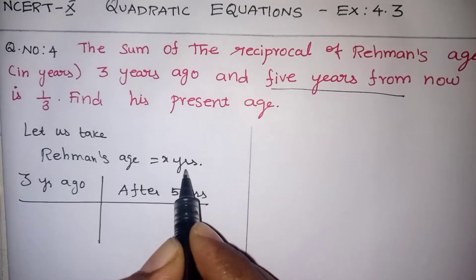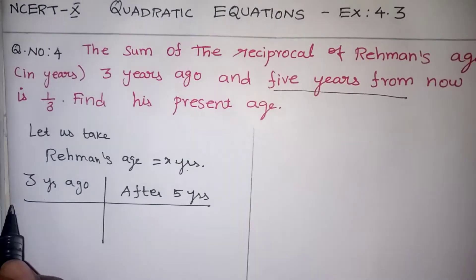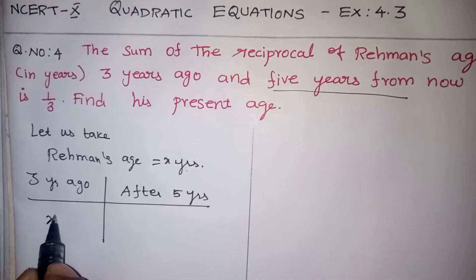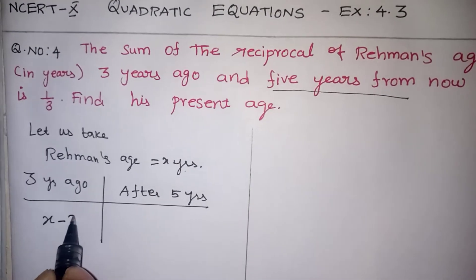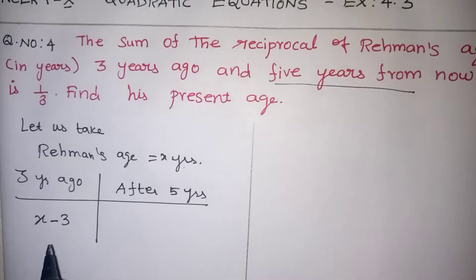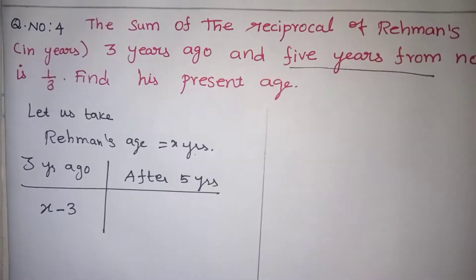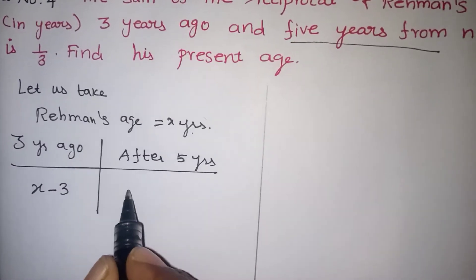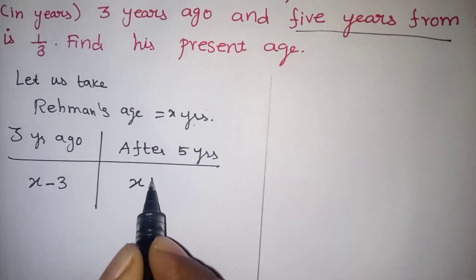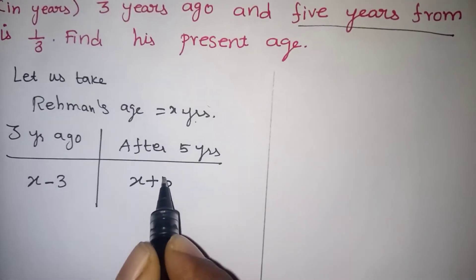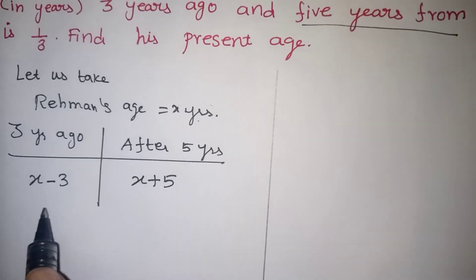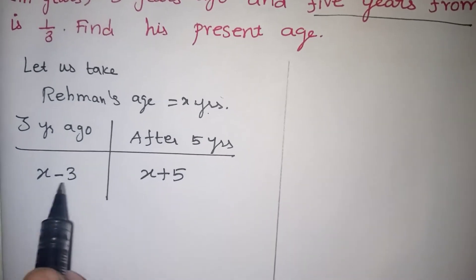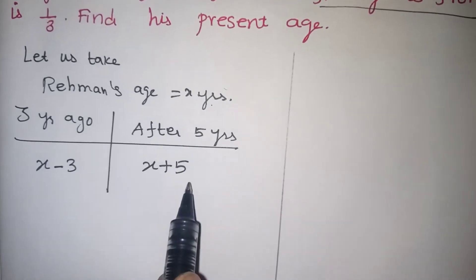Now he is X years old. So 3 years ago he would be X minus 3, and after 5 years he will definitely be X plus 5. So these are the ages for 3 years ago and 5 years later.